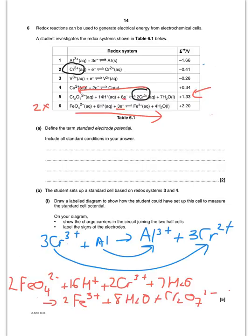Simplifying by cancelling H⁺ ions, the 14H⁺ and 16H⁺ reduce to 2H⁺ on the left side, and the water molecules simplify so that 8H₂O minus 7H₂O leaves just 1H₂O on the right.